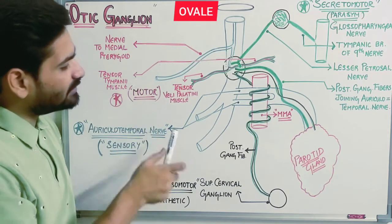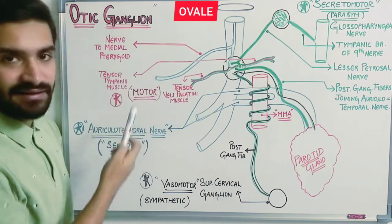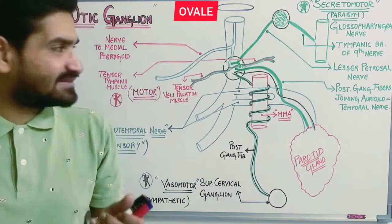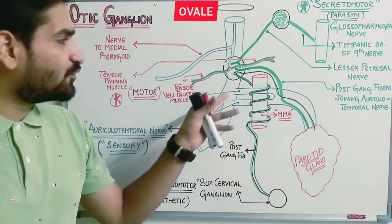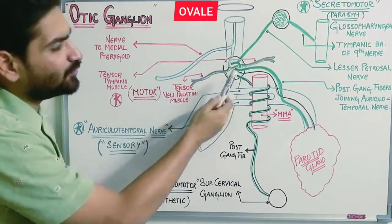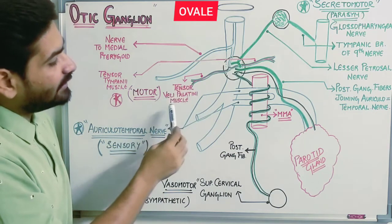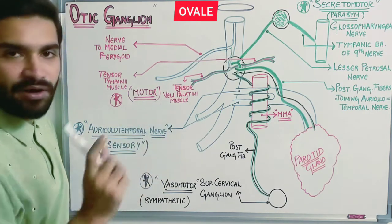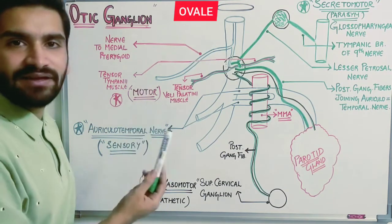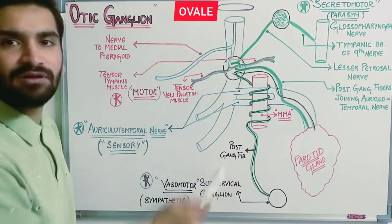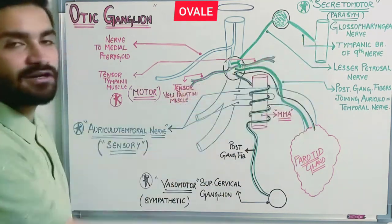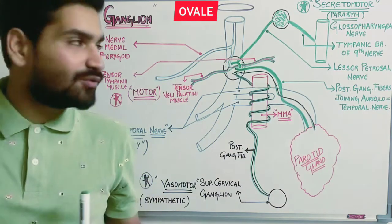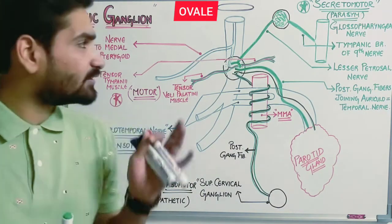The motor supply is via the nerve to medial pterygoid, which also supplies tensor veli palatini and tensor tympani. The otic ganglion is very small — two to three millimeters in size. It lies medial to the mandibular nerve and lateral to the tensor veli palatini muscle. An important point: topographically it is related to the mandibular nerve, but functionally it is related to the glossopharyngeal nerve.